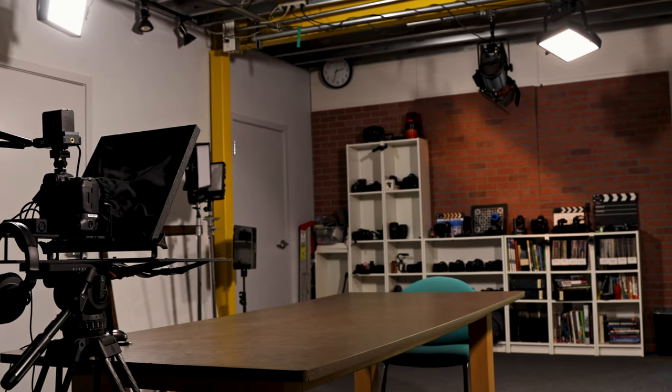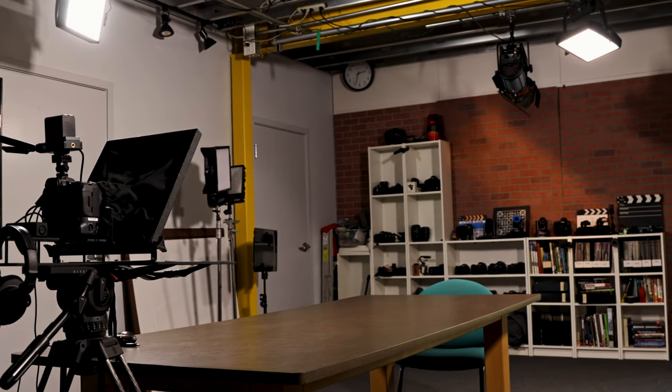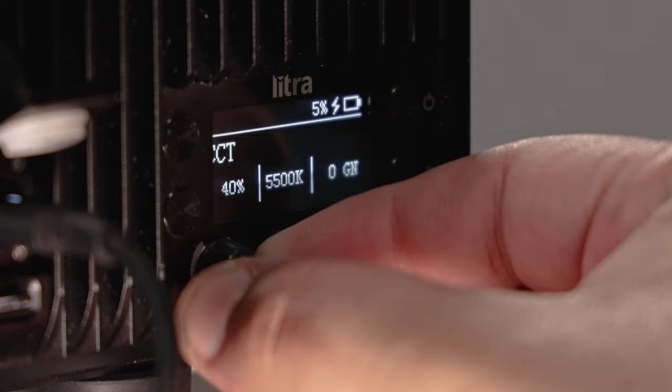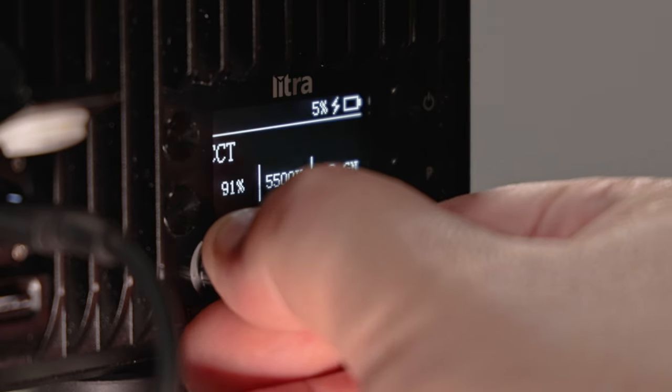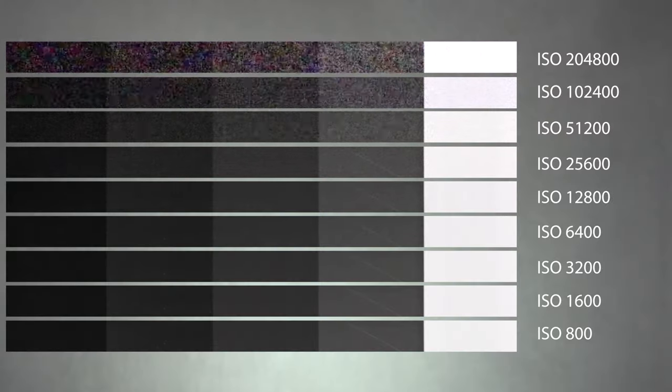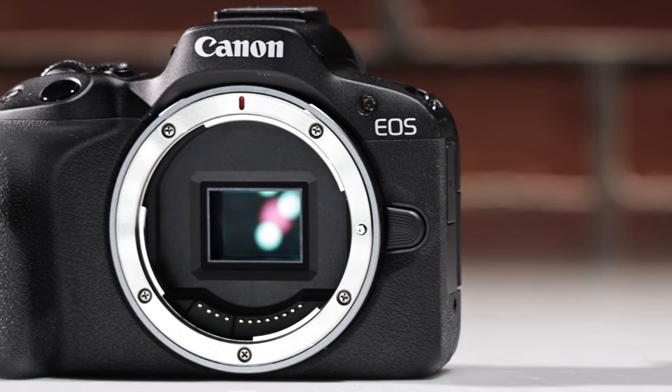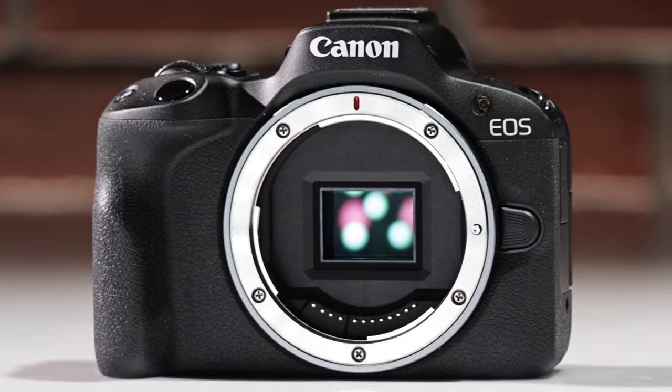Now let's talk about how you can minimize image sensor noise in your video footage. The first thing you can do is shoot in well-lit conditions — the more light that enters your camera, the less noise you'll have in your footage. You can also adjust the camera's ISO setting to reduce noise, but keep in mind that a high ISO will add noise to the image. Another thing you can do is use a camera with larger pixels, which typically means a larger sensor with a lower pixel count. This will make each pixel bigger, allowing them to capture more light and produce less noise.